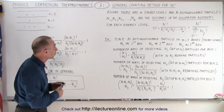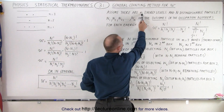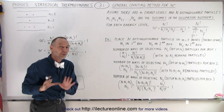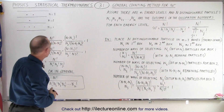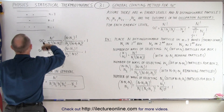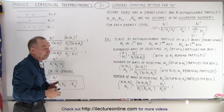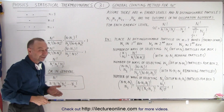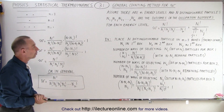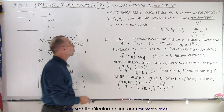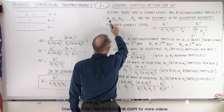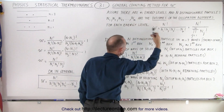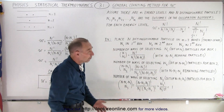Here we are going to take the case where there are n energy levels and large N distinguishable particles. We say we want distinguishable particles. Here we have a simple example where there are three energy levels and six total particles, but this should work for any particular case. There are energy levels all the way from one to small n, n being the total number of energy levels or the total number of boxes.